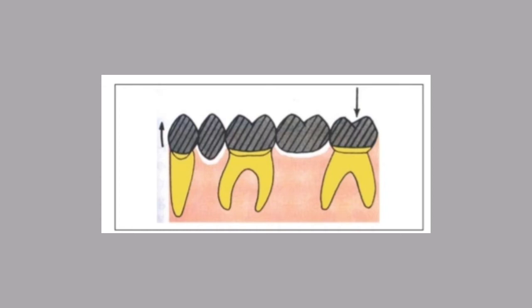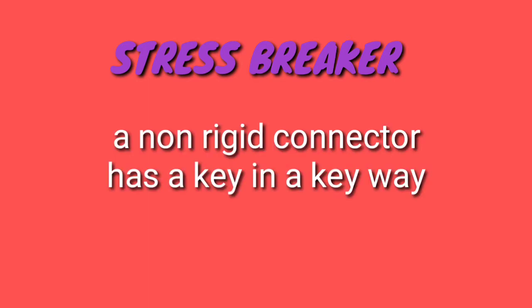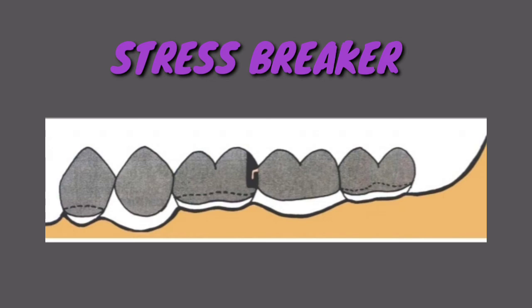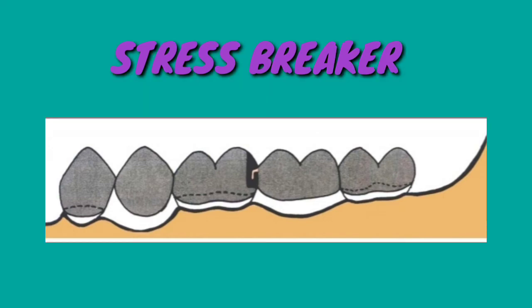So, to prevent this trauma, what we have to do is to provide a stress breaker. This stress breaker is provided near the pier abutment. What is a stress breaker? A stress breaker is a non-rigid connector. It has a key and a keyway. The keyway is usually placed on the distal surface of the pier abutment.